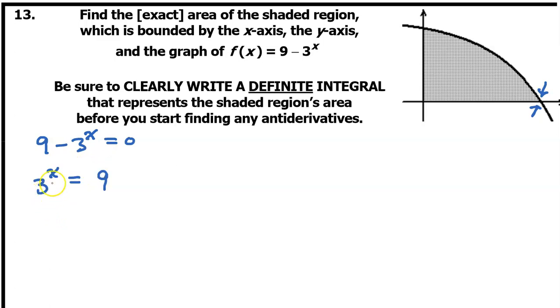In other words, 3 to the x power is equal to 9. Well, this one is simple enough that we can just do it mentally. 3 to what power equals 9? 2. So x equals 2.